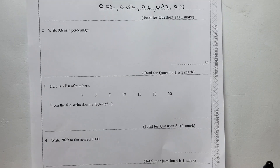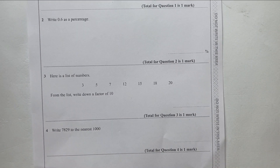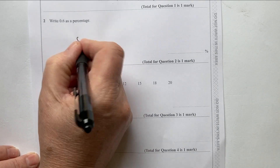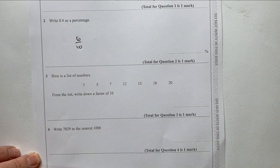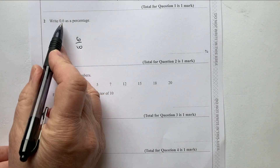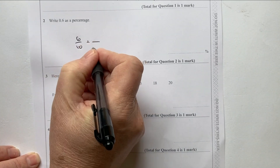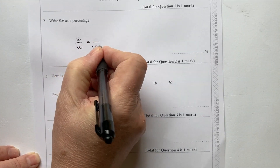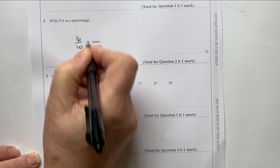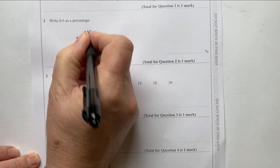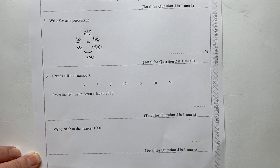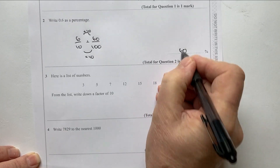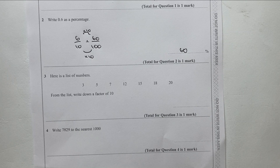Next: write 0.6 as a percentage. Percent means out of 100. As it stands, this is 6 out of 10 because that's 6 tenths. I need to make it out of 100, so I multiply the bottom by 10 and therefore multiply the top by 10. That gives me 60 out of 100, which is 60%.